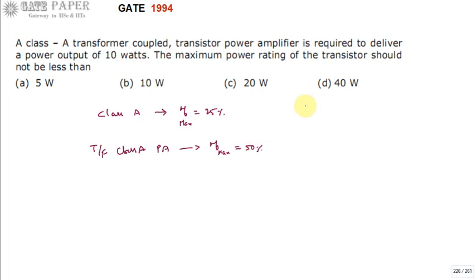One important point about Class A power amplifiers is that they are not used practically. The total input DC power supplied equals the output AC power across the load plus the power dissipated in the transistor. Based on this power dissipated in the transistor, we have to choose the power rating of the transistor.